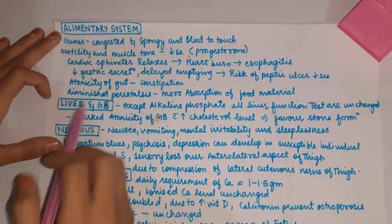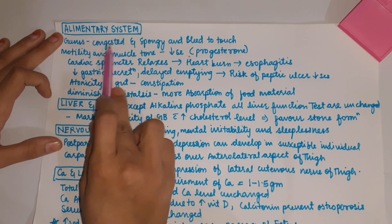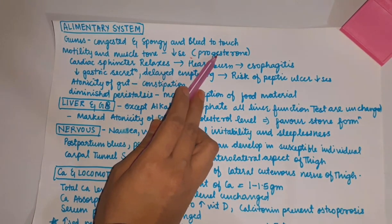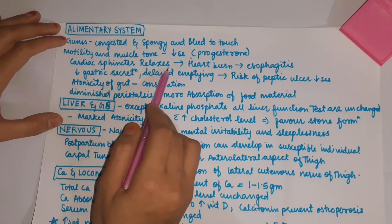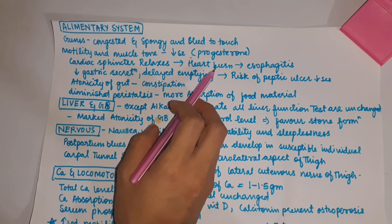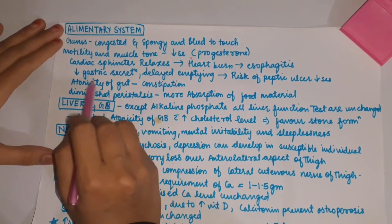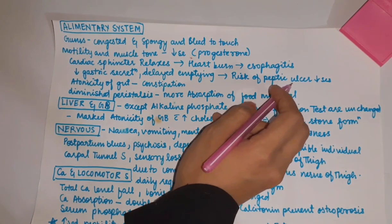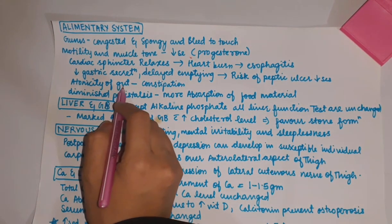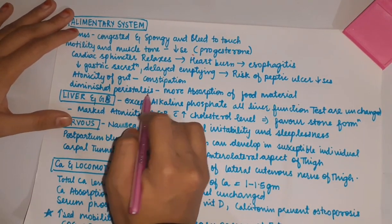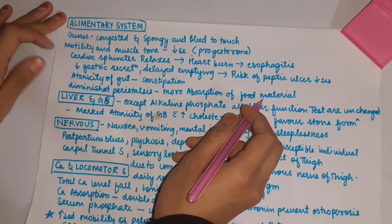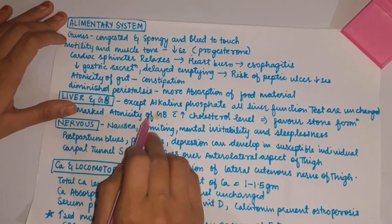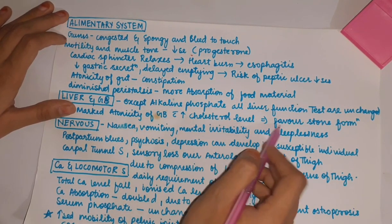Gastrointestinal system: there occurs congestion of the gums — they become spongy and bleed on touch. Motility and muscle tone decrease under the influence of progesterone as it relaxes smooth muscle. The cardiac sphincter relaxes, leading to acidity, heartburn, and esophagitis. There is decreased gastric secretion, delayed gastric emptying, and reduced risk of peptic ulcer. Atonicity of the bowel leads to constipation. Diminished peristalsis leads to more absorption of food material. Liver function tests including alkaline phosphatase are normal. Marked atonicity of the gallbladder with increased cholesterol level favors stone formation.